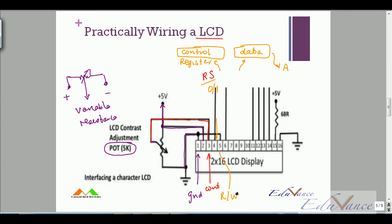Pin number five is the RW pin, or read/write pin. Typically we do not read from the LCD — we just want to display on it, so we only write to it. For that, the RW pin must always be maintained at zero, so we connect the RW pin to ground.